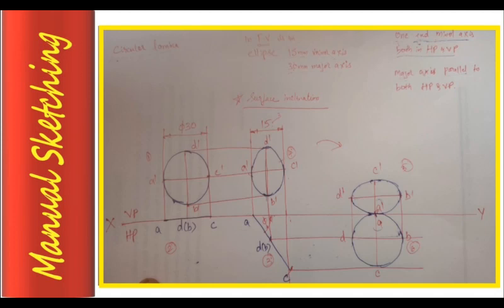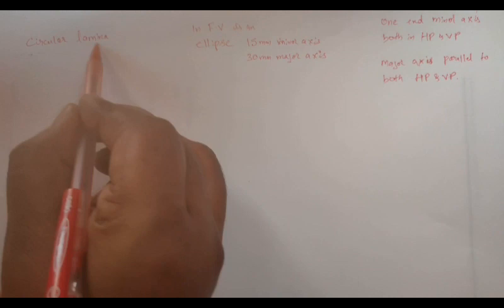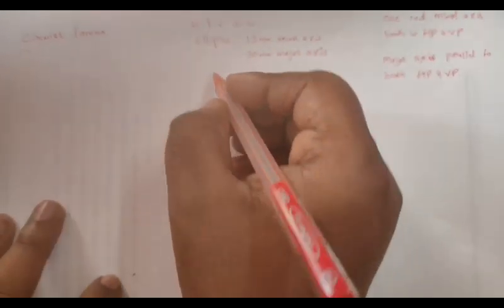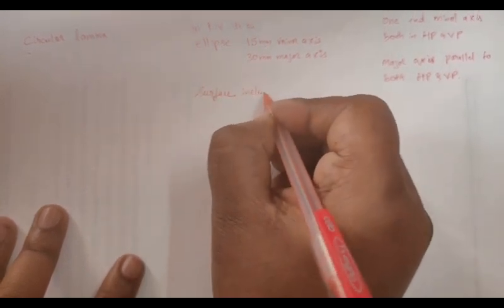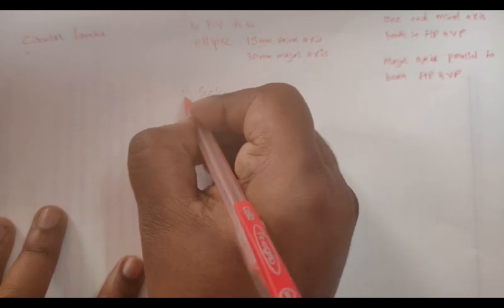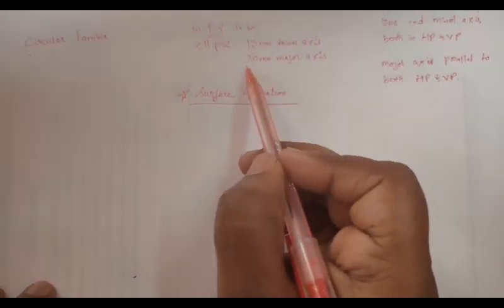Hello students. I hope you understood the concept of projection of circular lamina with the 3D model in my previous video. In this video I'm going to explain how to draw it manually. I'm going to draw it with a freehand sketch. Surface inclination is very important in solving a circular lamina problem — it determines where you're going to keep the lamina.